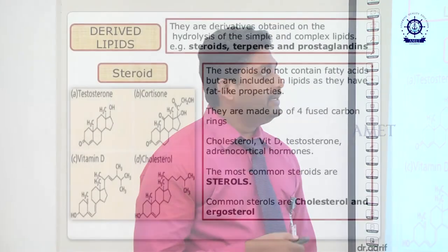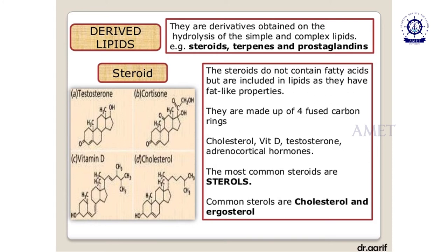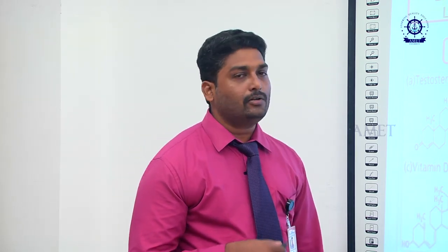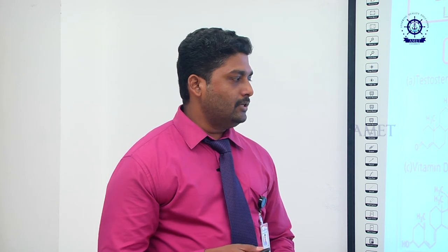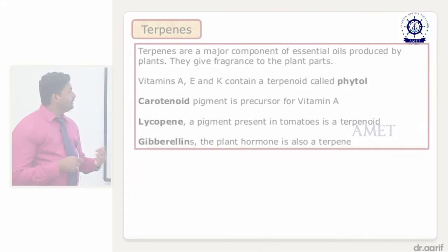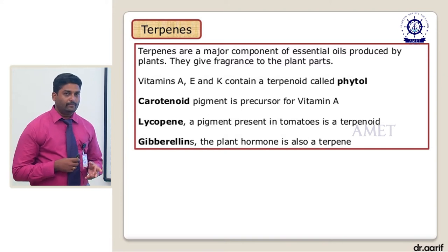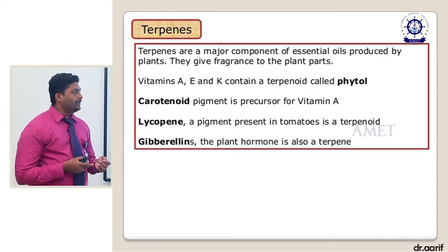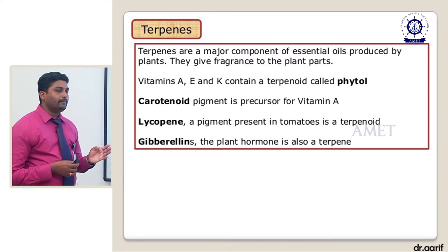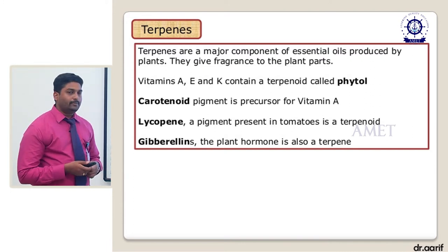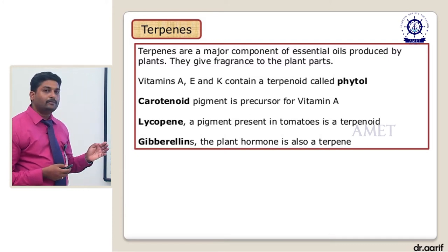Derived lipids are derivatives obtained on hydrolysis of simple and complex lipids. Examples are steroids, terpenes, terpenoids and prostaglandins. Steroids do not contain fatty acids but have fat-like properties. They are made up of four fused carbon rings. Examples include cholesterol, vitamin D, testosterone and adrenocortical hormones; the most common steroids are cholesterol and ergosterol. Terpenes are the major components of essential oils produced by plants, responsible for giving fragrance to plants. Vitamins A, E and K contain terpenoids called phytol. Lycopene, a pigment in tomatoes, is a terpenoid, and gibberellins, the plant hormone, is also a terpene.